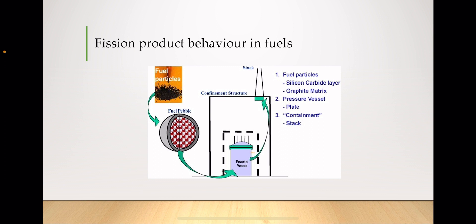Fission product behavior refers to the characteristics and behavior of fuel in a nuclear fission process. Nuclear fission is the splitting of atomic nuclei — typically heavy isotopes such as uranium-235 or plutonium-239 — into two or more lighter nuclei, along with the release of a large amount of energy. Here we can see the fission product behavior in fuels.